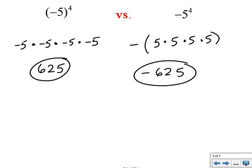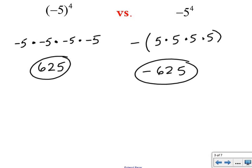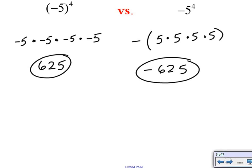So it's a huge difference between the answers on the left and the right. Pay very close attention when evaluating expressions. If there are parentheses around the base, each time you write the base you write the negative with it. If there aren't parentheses, the negative is just affecting it one time and will only affect your final answer.